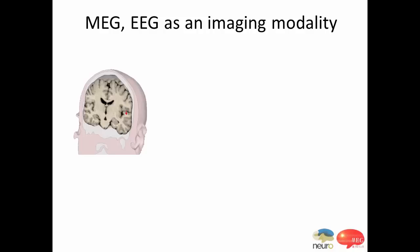We thought it would be interesting to go through the basic principles of MEG and EEG with an emphasis on the capacity to do imaging. In the brain, we have billions and billions of neurons and these exchange electrical signals. Every time you have an electrical current flowing in a medium, there is an electromagnetic wave that is created. Here on the left is a coronal view of the brain and the little red arrow is an elementary current flow of neural origins. Every time there is a current, there is an electromagnetic field that is generated.